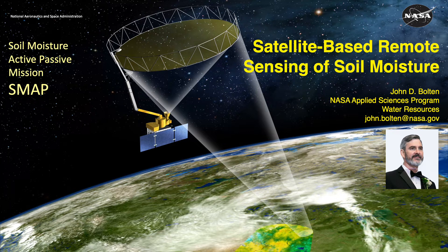First I'd like to point out this figure here — this is the Soil Moisture Active Passive Mission, or SMAP. This is NASA's latest and greatest achievement focused on satellite-based observations of soil moisture. This was launched in 2015, and I'll go into this in a little bit more detail in a second.